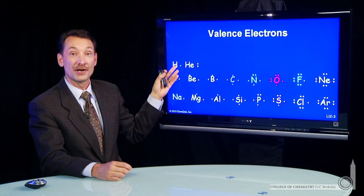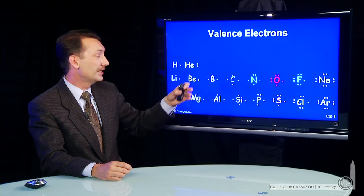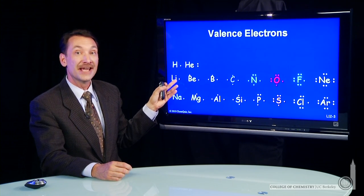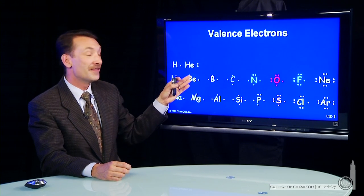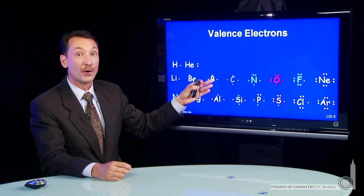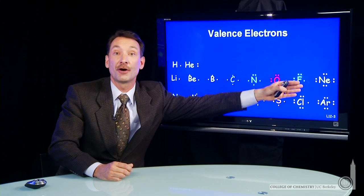So for hydrogen, one electron; helium, two; and then lithium, the outermost shell, the principal quantum level two, one electron, then two for beryllium, three for boron, et cetera, all the way across to neon.